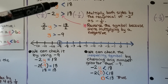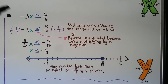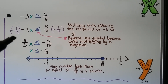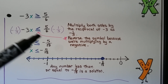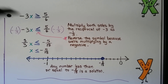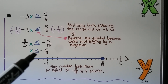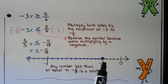Here we have negative 3x is greater than or equal to 56. We multiply both sides by the reciprocal of negative 3, which is negative one-third. Remember, the reciprocal takes the sign, so it's negative one-third. Negative times a negative gives positive 3/3, and we reverse the symbol because we're multiplying by that negative. On the right side we get negative 5/18. So x is less than or equal to negative 5/18. Because it's 'or equal to,' we use a filled-in dot, and graph all numbers less than or equal to negative 5/18 heading into the negatives.